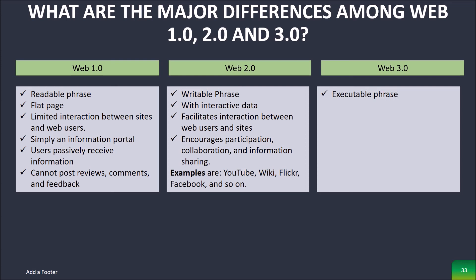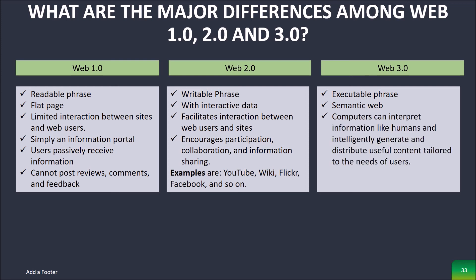In Web 3.0, it is the executable phase of the World Wide Web with dynamic applications, interactive services, and machine-to-machine interactions. Web 3.0 is a semantic web, which refers to the future. In Web 3.0, computers can interpret information like humans and intelligently generate and distribute useful content tailored to the needs of users. An example of Web 3.0 is TiVo, a digital video recorder whose recording program can search the web and read what it finds based on your preferences.